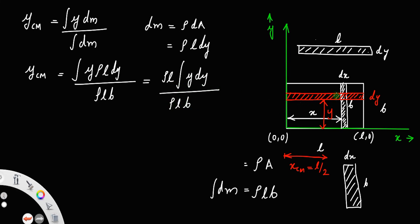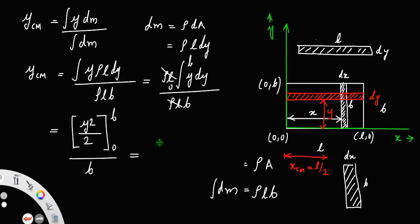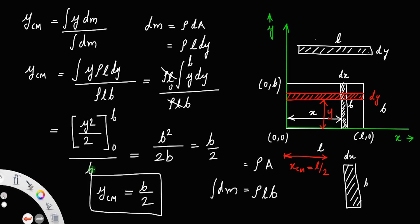We put the limit 0 to b. The integral of y dy equals y²/2; putting the limits gives b²/2 divided by b, which equals b/2. So the y coordinate of the center of mass equals b/2. Combining these two results, the center of mass is at the exact center of the rectangle — the meeting point of the diagonals. The coordinate of the center of mass is (l/2, b/2), where l and b are the length and breadth of the rectangle.